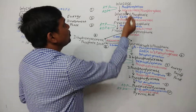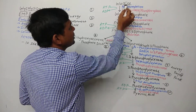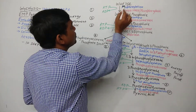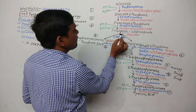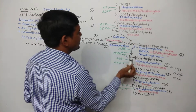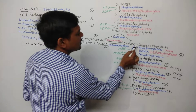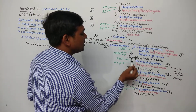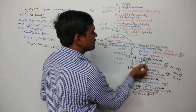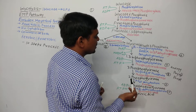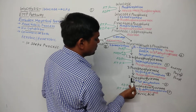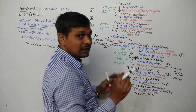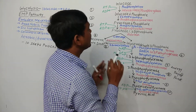Let's look at all the molecules involved. The molecules written in black are: glucose, glucose 6-phosphate, fructose 6-phosphate, fructose 1,6-bisphosphate, dihydroxyacetone phosphate, glyceraldehyde 3-phosphate, 1,3-bisphosphoglycerate (also called 1,3-diphosphoglycerate), 3-phosphoglycerate, 2-phosphoglycerate, phosphoenol pyruvate, and pyruvic acid. These are all the molecules formed in glycolysis.